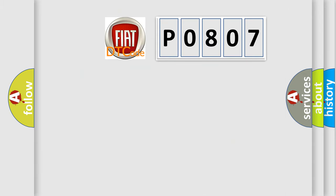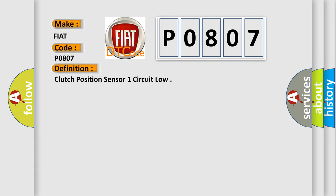So, what does the Diagnostic Trouble Code P0807 interpret specifically for Fiat car manufacturers? The basic definition is Clutch Position Sensor 1 circuit low.